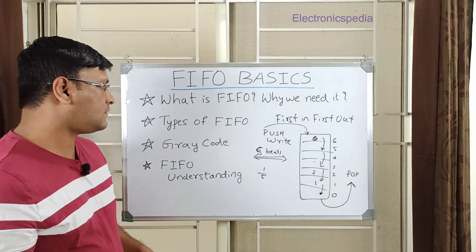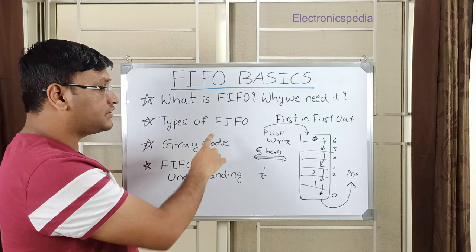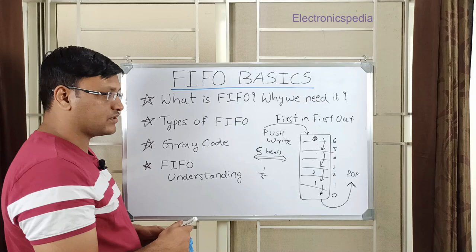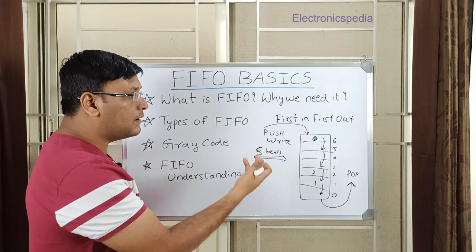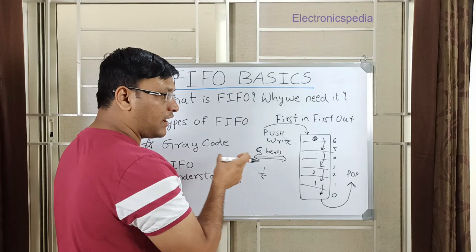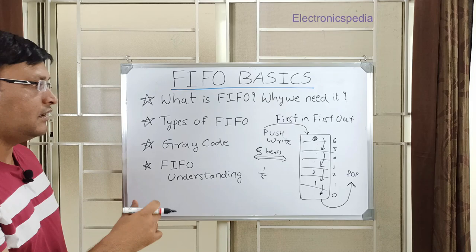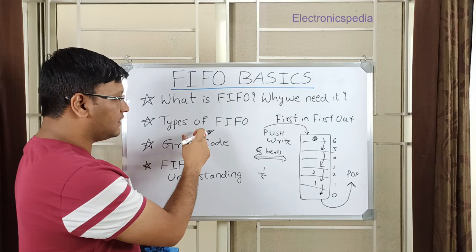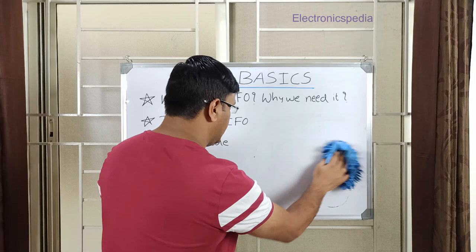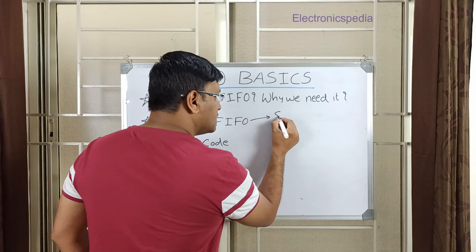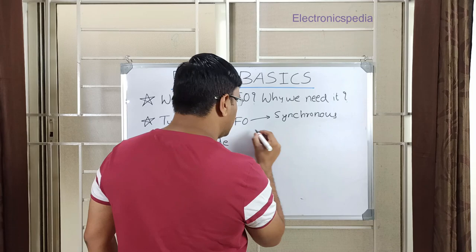There are two types of FIFOs. The first is the synchronous FIFO: the write clock and read clock run on the same frequency, but the read or write operations may not occur at the same interval. The second is the asynchronous FIFO, where the write and read domain clocks are completely different.